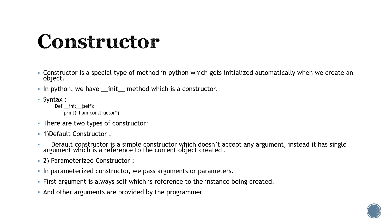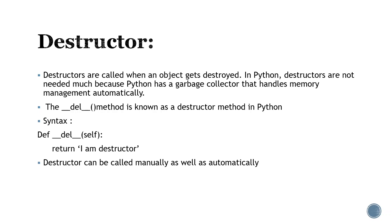The second type is the parameterized constructor. As the name suggests, we can pass parameters — more than one argument. The first argument is always self, which is a reference to the instance being created. After self, you can add any other arguments you want to use further in the constructor. So there are two types: default and parameterized constructor.